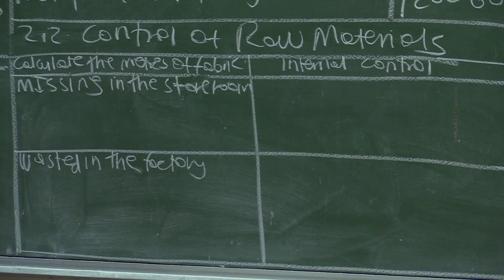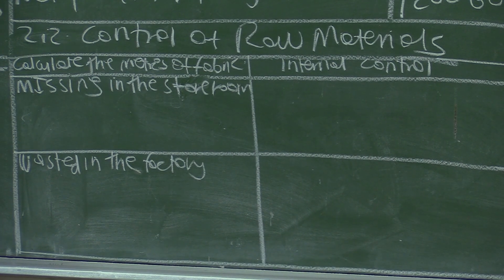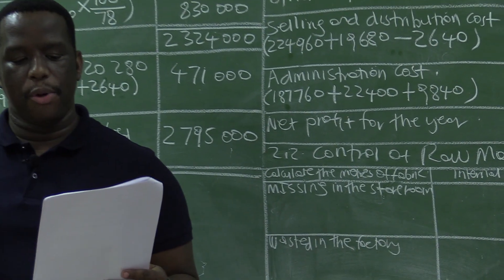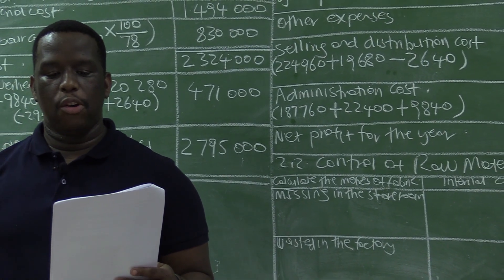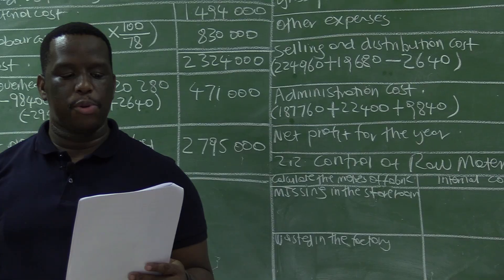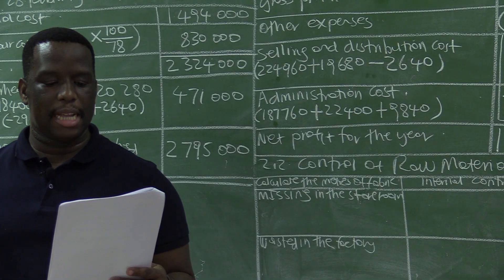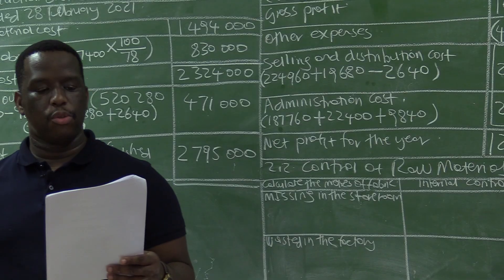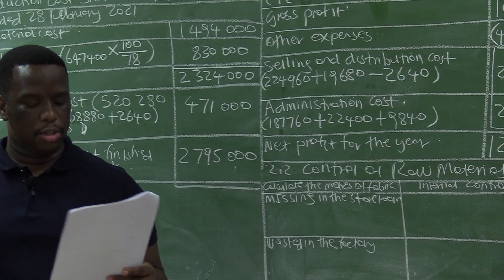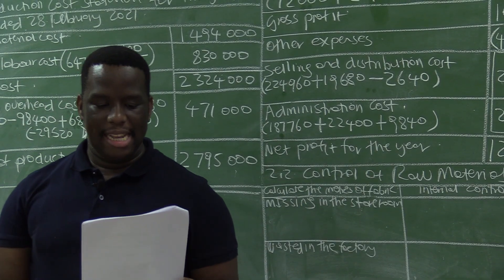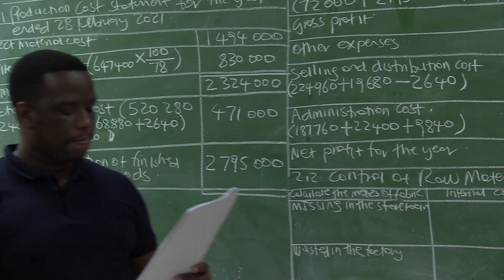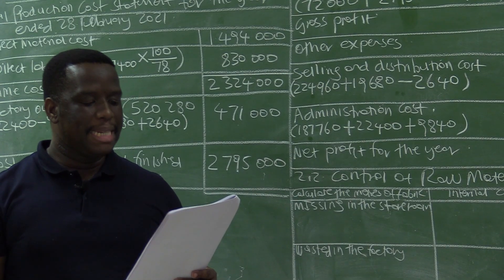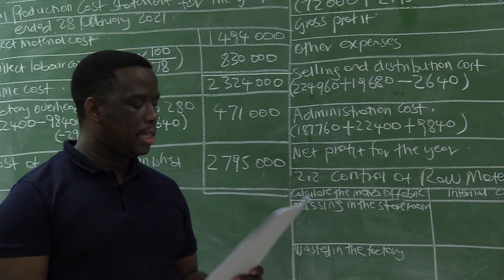Looking at the 2.2 question paper: after completing the statement in question 2.1, the internal auditor of Prudy Manufacturers suspects that the raw material of fabric is not being well controlled — not being controlled well in the storeroom and the factory. Calculate the meters of fabric missing from the storeroom.